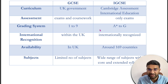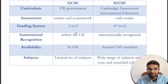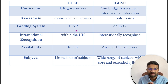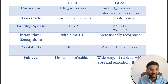Regarding the grading system, in GCSE you have grades from 1 to 9, where 9 is the highest and top grade. In iGCSE, A* is the top grade and the lowest is G.